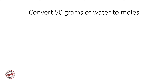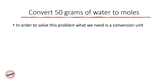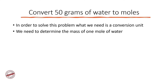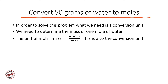First we will convert 50 grams of water to moles. We want to express how many moles are present in 50 grams. Every time you want to convert from one unit to a different unit, you need a conversion unit. In this case the conversion unit is grams per mole, because the relationship between moles and grams comes from the molar mass — the mass of one mole. For water, the molar mass is 18.02 grams per mole.